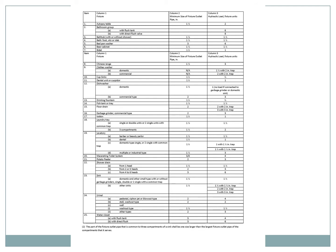So this is table 7-4-9-3. If you recall, four means drainage, so this is where you find your drainage for individual fixtures. You have an item column to begin with — it just has a series of numbers in it. That's just an easy find feature; it helps you find the fixture you're looking for quickly. Column one is the fixture itself. So if I called out item number one, you'd know it was an autopsy table.